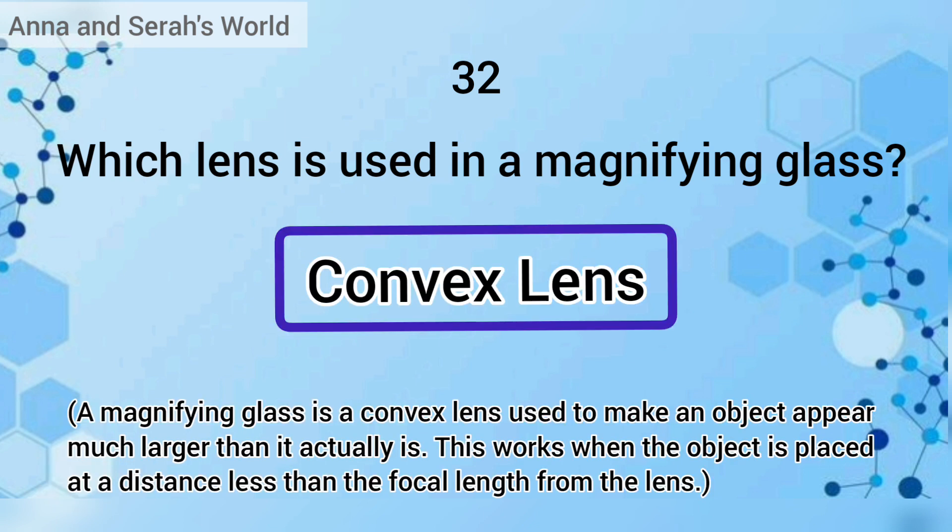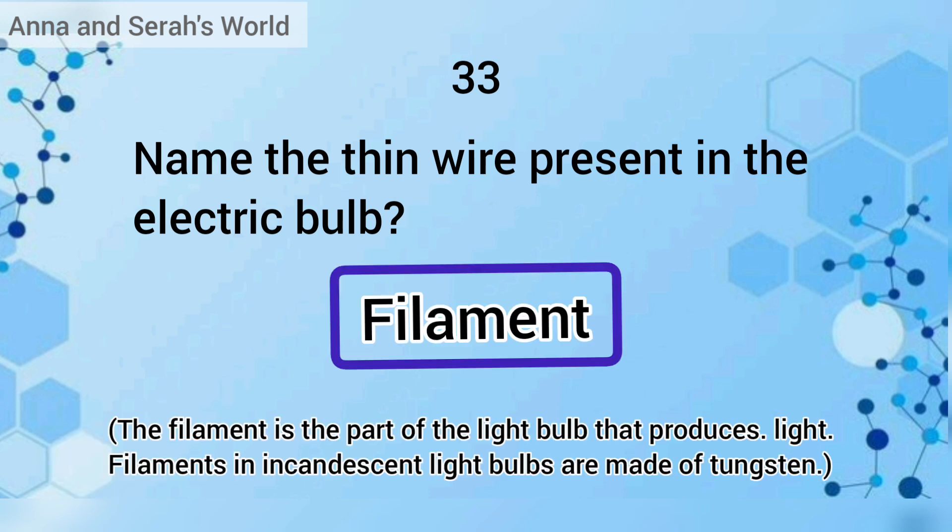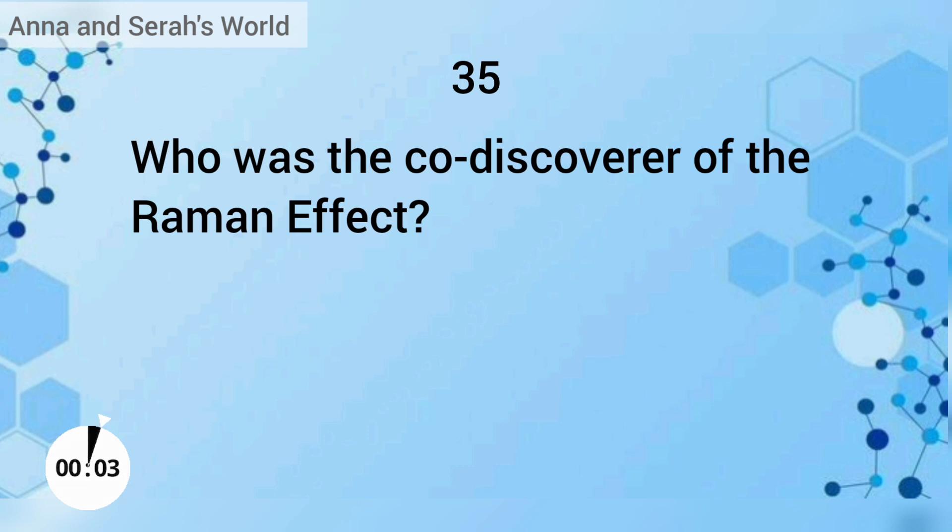Name the thin wire present in the electric bulb. The answer is filament. In which year did Sir C.V. Raman discover the Raman Effect? The answer is 1928.